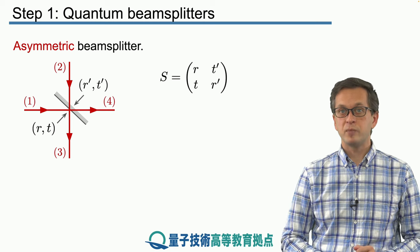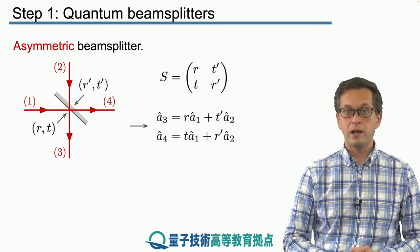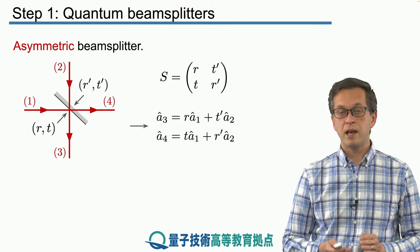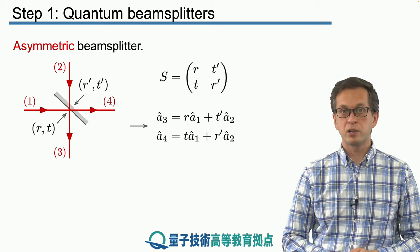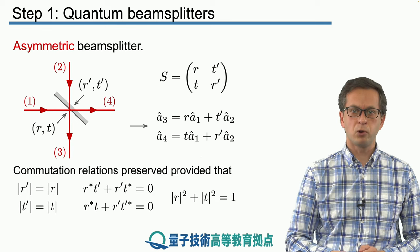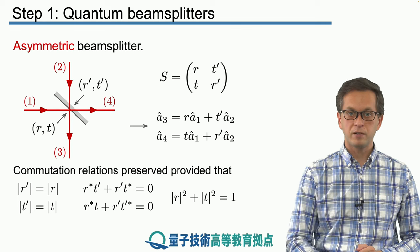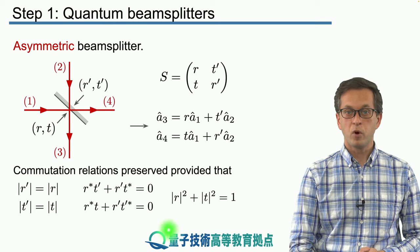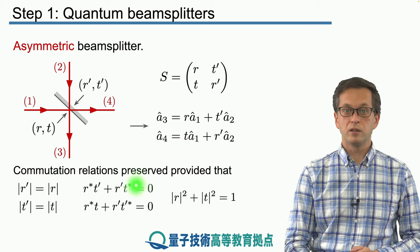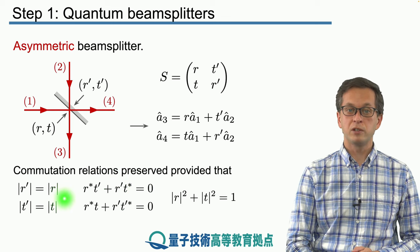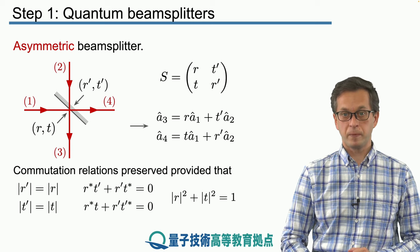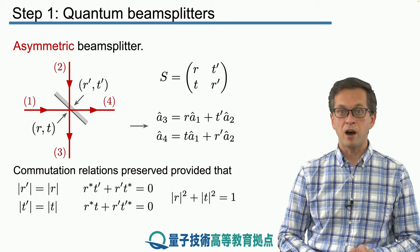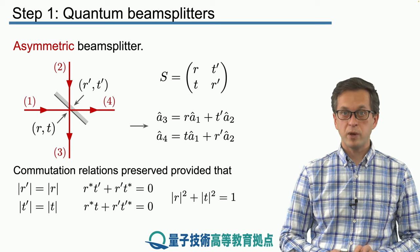We now ask: when does such a matrix preserve the commutation relations? We write out the transformed output modes A3 and A4 and demand that the commutator of A3 and A3-dagger equals 1, and similarly for output mode 4. This leads to the following conditions: the modulus of r squared plus the modulus of t squared equals 1, all cross terms are zero, and the modulus of r equals the modulus of r-prime, and the modulus of t equals the modulus of t-prime. These are the unitary conditions for the most general asymmetric beam splitter, where r, t, r-prime, and t-prime are complex numbers, and such a matrix preserves the commutation relations.